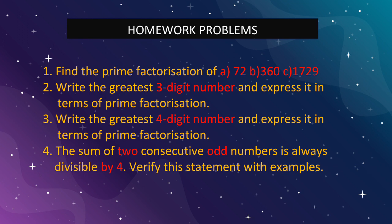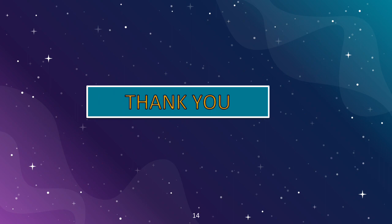Here is your homework. Find the prime factorization of 72, 360, and 1729. Write the greatest 3-digit number 999 and express it as prime factors. Write the greatest 4-digit number 9999. Also verify: the sum of 2 consecutive odd numbers is always divisible by 4 — choose any 2 consecutive odd numbers, add them, and check if the result is divisible by 4. Thank you, students.